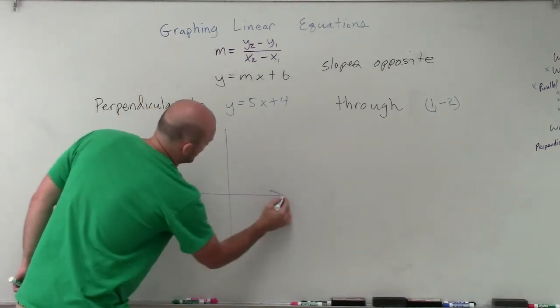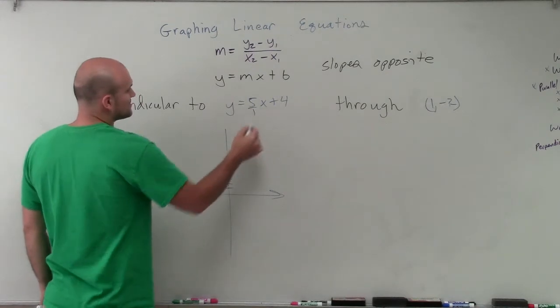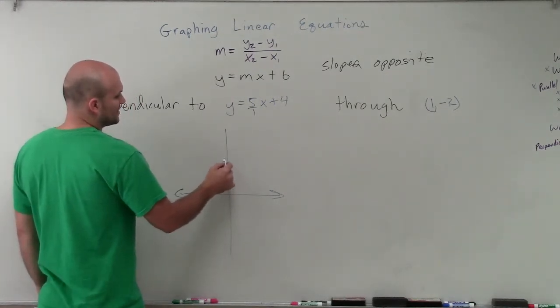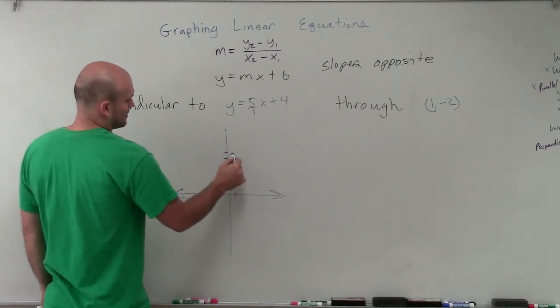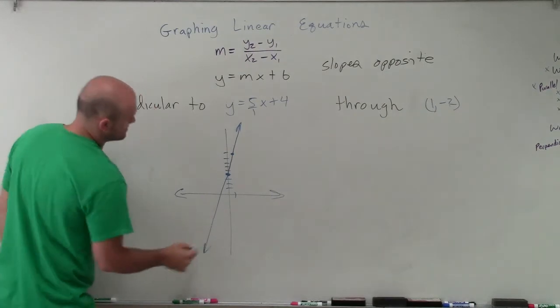So we have a y-intercept of 4, so I'm going to go up 4, 1, 2, 3, 4, and I have a slope of 5 over 1. So that means I'm going to go up 5, 1, 2, 3, 4, 5, and then over 1 unit. So I'm roughly going to have a line that's going to look something like this.